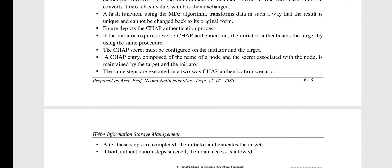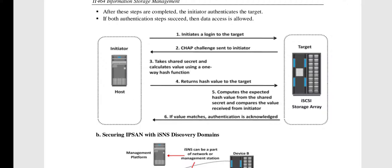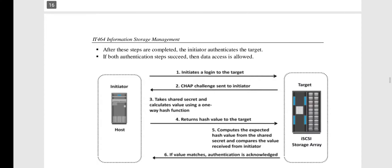CHAP is a two-way authentication scenario, as shown in this figure. We have an initiator and the target, which is the storage array. The host initiates a login to the target. A CHAP challenge is sent to the initiator, which takes the shared key and calculates the value using a one-way hash function. This hash value is returned to the target, which computes the expected hash value, compares the shared secret, and if matched, the authentication is acknowledged.